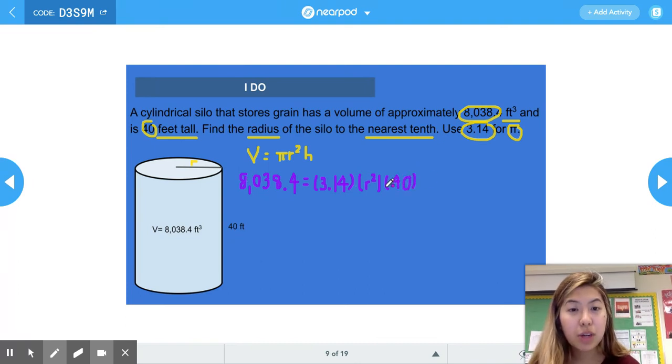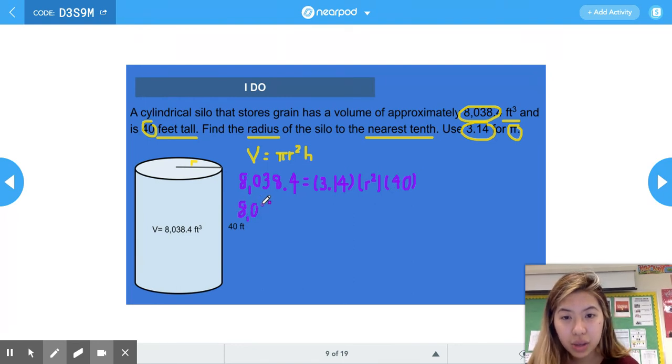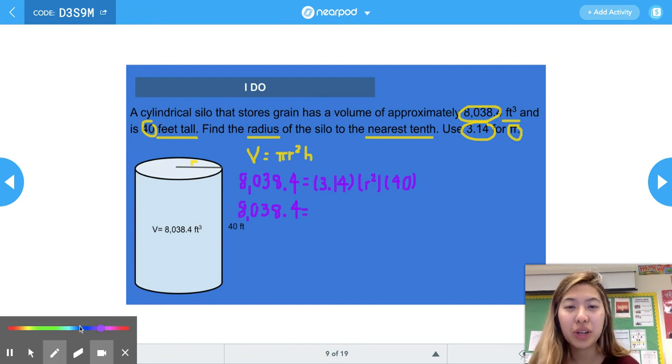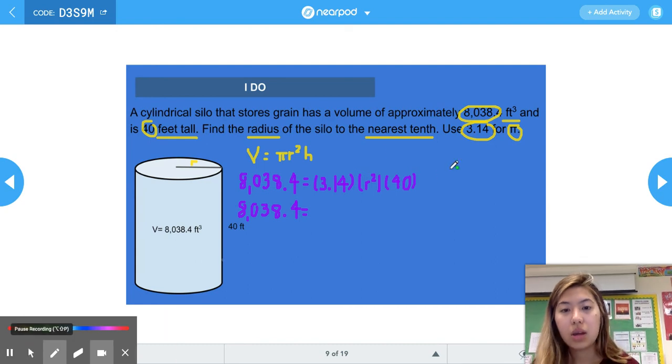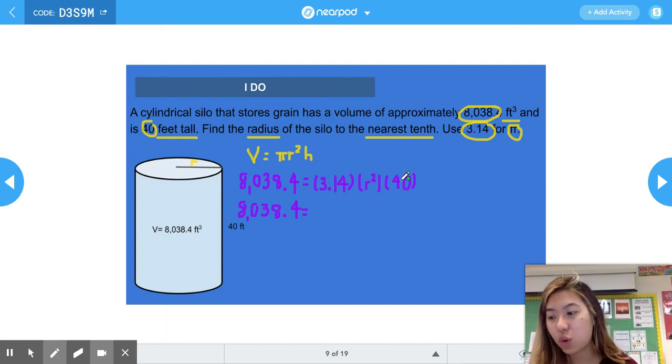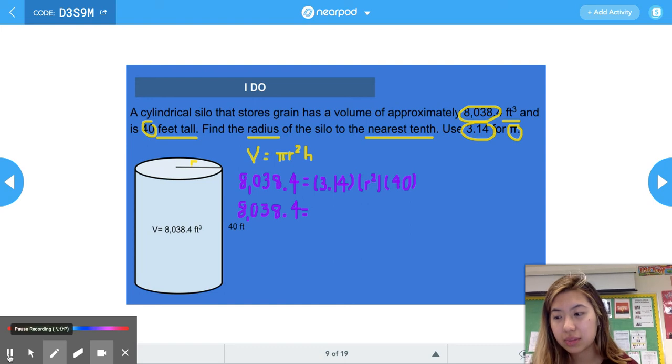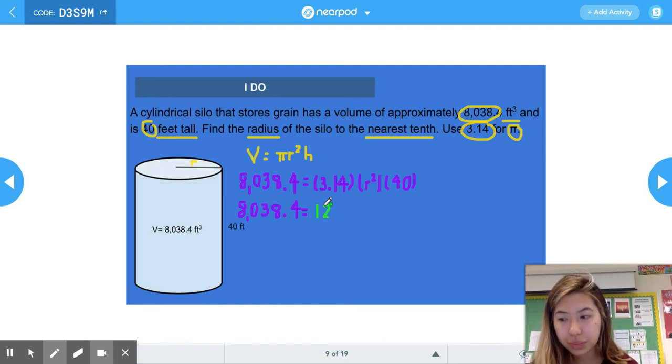Next we're going to multiply the numbers that we do know. So we multiply together 3.14 times 40, and that gives us 8,038.4 = 125.6r². We want to get this 125.6 to the other side, because eventually we just want to isolate the r. So we're going to divide both sides by 125.6.